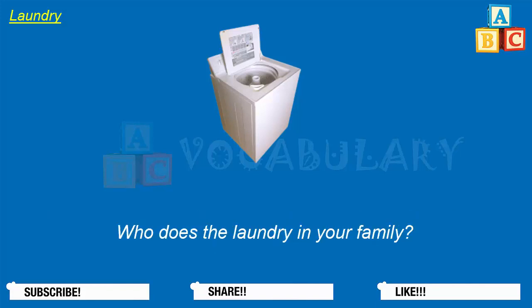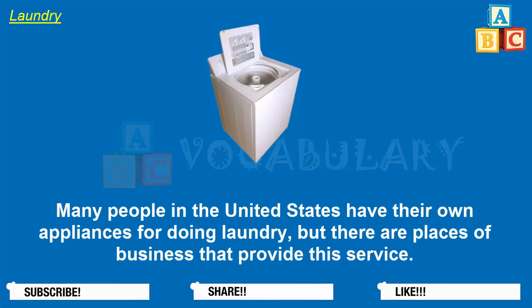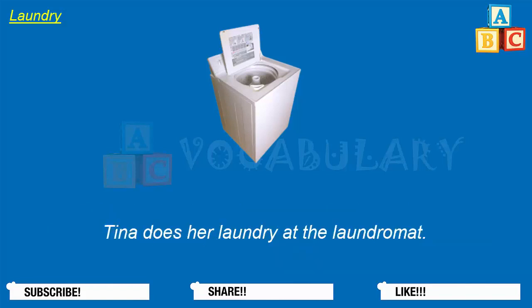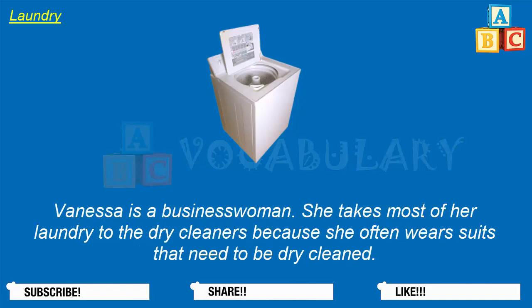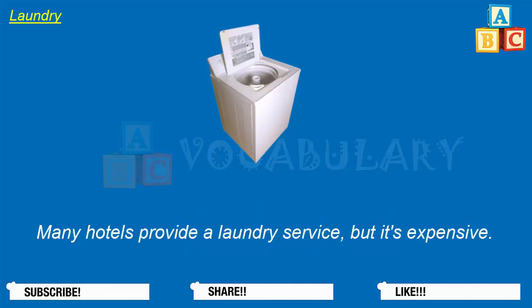Who does the laundry in your family? Many people in the United States have their own appliances for doing laundry, but there are places of business that provide this service. Tina does her laundry at the laundromat. Bob pays someone at the laundromat to do his laundry. Vanessa is a businesswoman — she takes most of her laundry to the dry cleaners because she often wears suits that need to be dry cleaned. Many hotels provide a laundry service, but it's expensive.